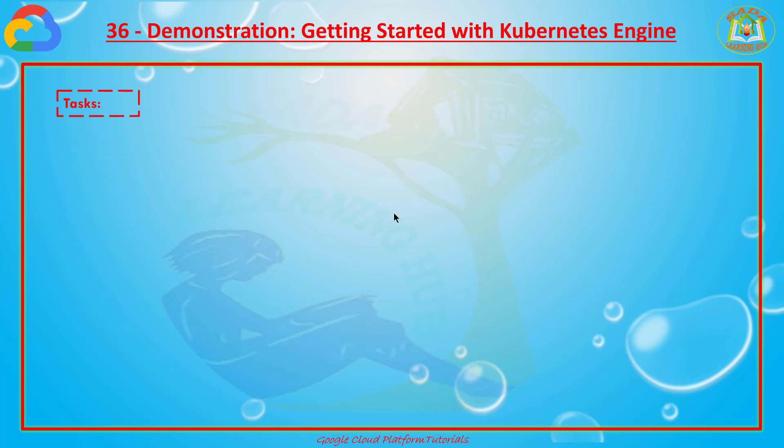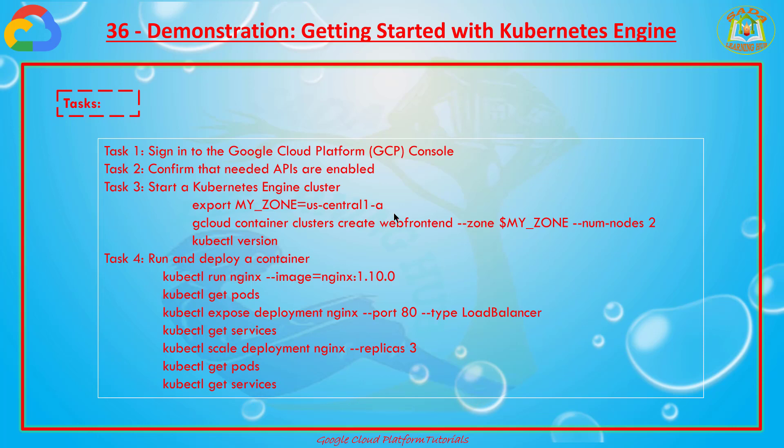This demonstration I divided into four tasks in Quick Labs. The first task is to log into the GCP console. After that we need to confirm APIs are enabled. The third task is to start the Kubernetes Engine cluster using Cloud Shell with commands, and finally run and deploy the container.